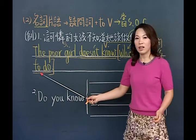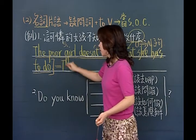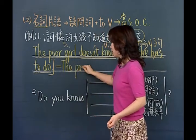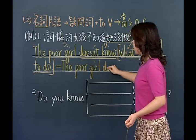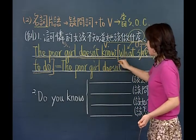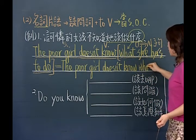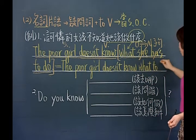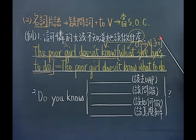名词子句可以改成所谓的疑问词加上不定词的名词片语。方法是：前后两句话的主词一样（the poor girl就是she），主词相同就省略掉。动词是看主词脸色的，主词省略，动词省略，刚好这里已经有一个to了。所以：The poor girl doesn't know what to do。我们已经很成功地把名词子句改成了名词片语。